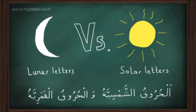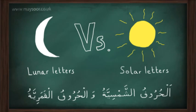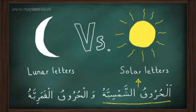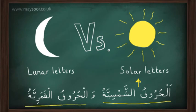Now let's move on to الحروف الشمسية والحروف القمرية. The Arabic alphabet consists of 28 letters, and those letters fall under two categories: those considered to be from الحروف الشمسية, also referred to as the solar letters or sun letters, and those considered to be from الحروف القمرية, also known as the lunar letters or moon letters.